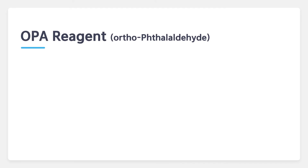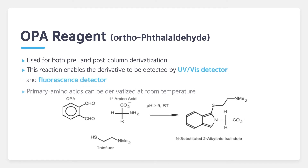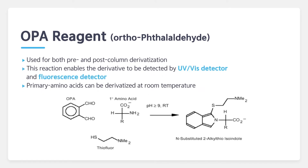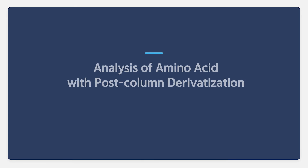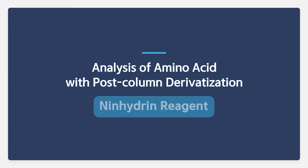OPA reagent is used for both pre- and post-column derivatization, and the OPA derivatives are detectable by UV visible detector and fluorescence detector. Primary amino acids can be derivatized with OPA at room temperature. Now, let's see how to analyze amino acid with post-column derivatization method using ninhydrin reagent.